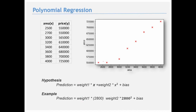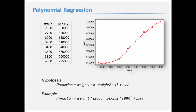Polynomial regression is used when a linear relationship cannot minimize the error sufficiently. Instead of a straight line, it fits a nonlinear (polynomial) curve: y = w1*x + w2*x^2 + bias. Adding polynomial terms bends the curve to better fit the data. Pre-trained weights can be applied to new inputs to predict the output.